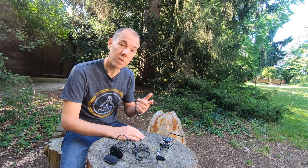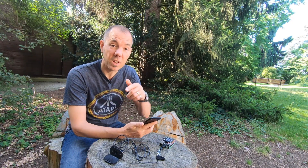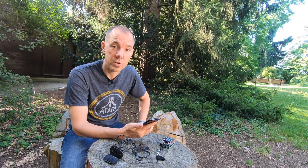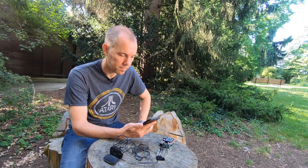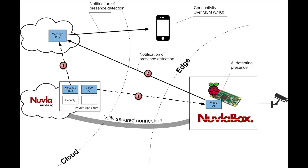Now let's switch to the Nuvla platform. I'll do this on my phone, but you can follow along on the desktop version. On the right we have the NuvlaBox and the video camera we've just connected. We need to deploy a video AI application into it using the Nuvla platform. That video AI also needs a message bus application in the cloud to send a notification when it detects a person, and then I'll register a tool on my iPhone to receive those notifications.